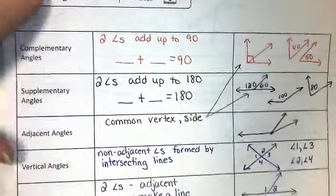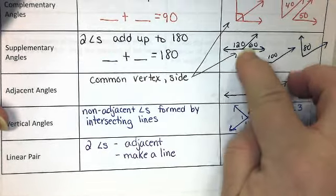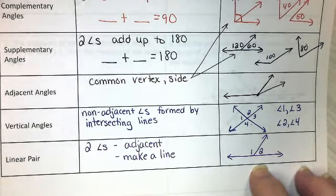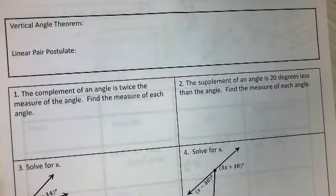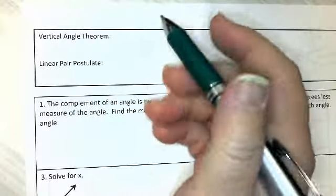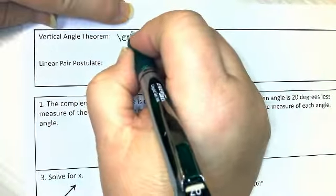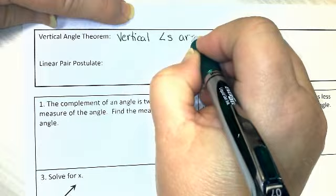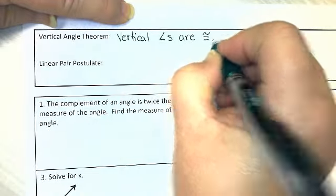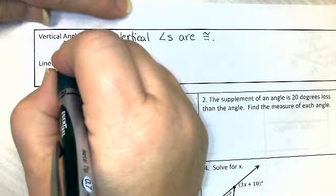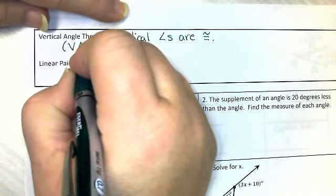Notice that this linear pair and these supplementary angles look exactly the same. And there's a reason for that that we're about to find out on the next page. We have something called the vertical angle theorem. The vertical angle theorem is pretty simple. It just says vertical angles are congruent. Vertical angles are congruent.